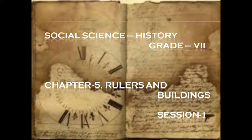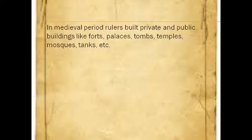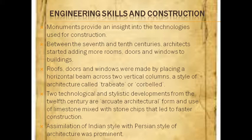Hello dear students, I hope you are doing great and taking good care of yourself by staying at home. Today let's start History Chapter 5: Rulers and Buildings. In the medieval period, rulers built private and public buildings like forts, palaces, tombs, temples, mosques, tanks, etc.